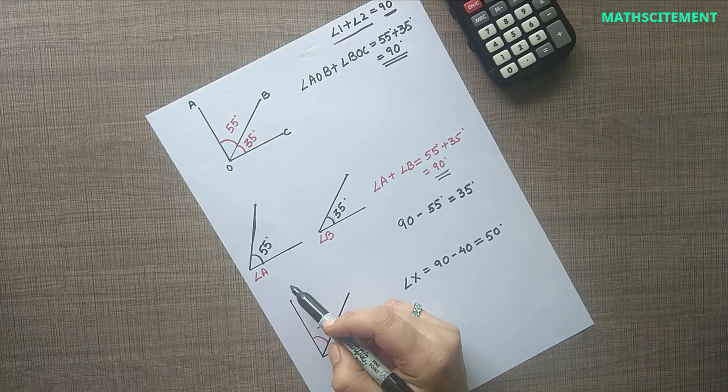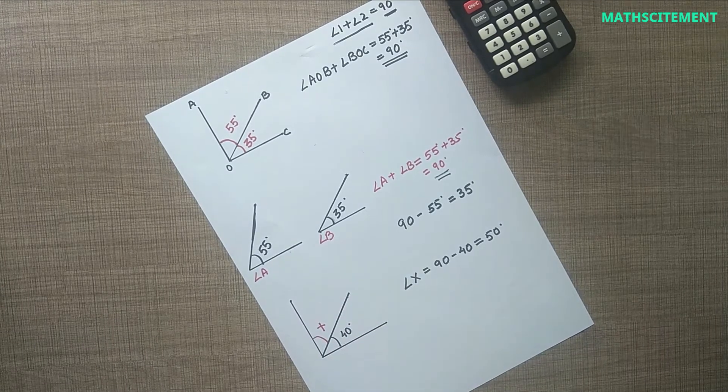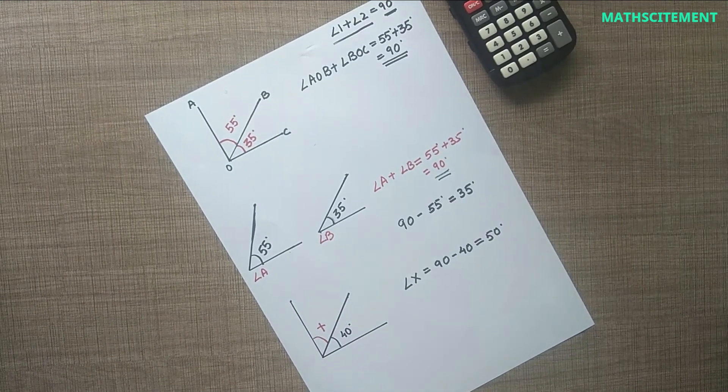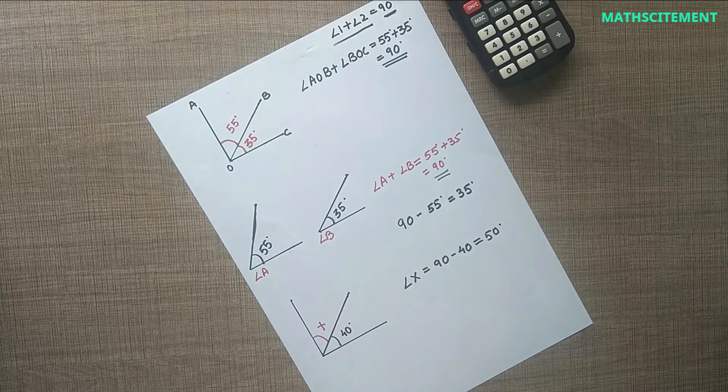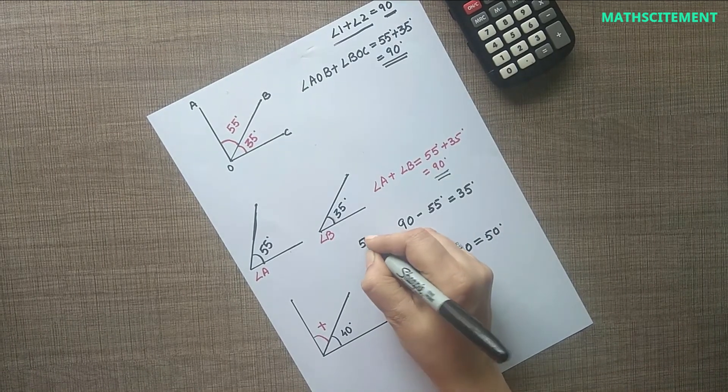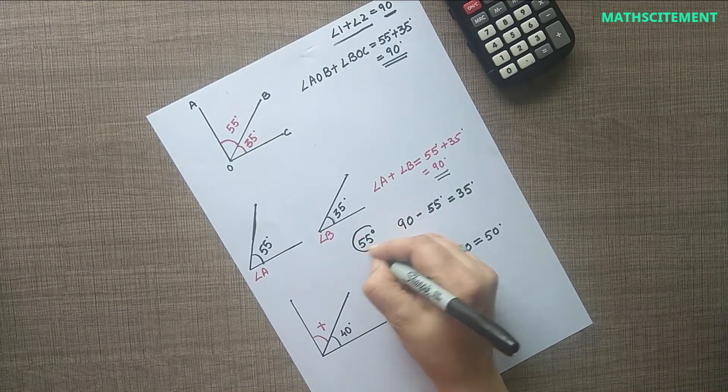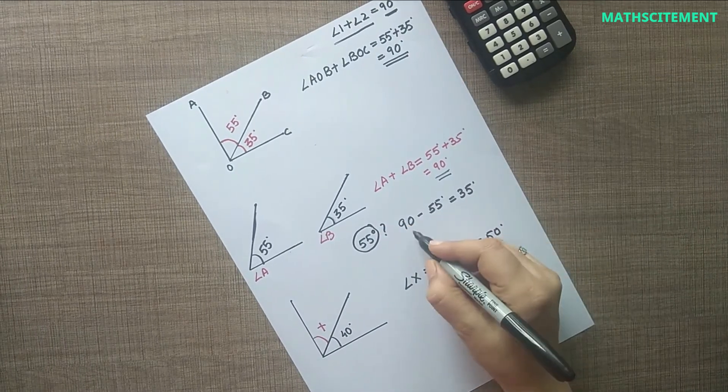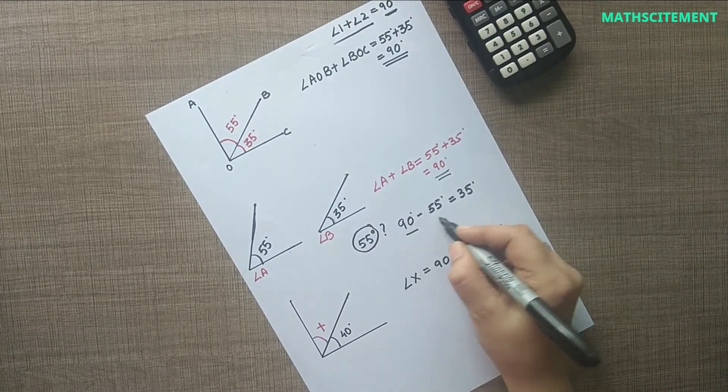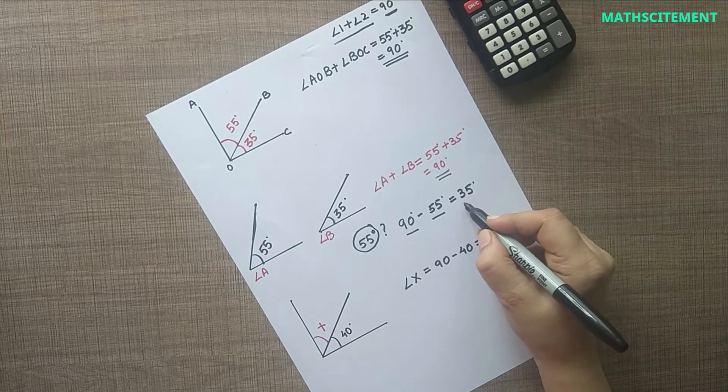Now, if you are asked to find the complement of an angle measuring 55 degrees, the answer will be 90 degrees minus 55 degrees equals 35 degrees.